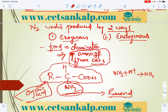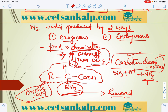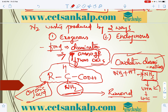After the amino group is removed, it undergoes oxidation — this process is called oxidative de-amination, which leads to the formation of ammonia (NH3). Ammonia is further converted into urea, and urea can be converted into uric acid in different organisms.